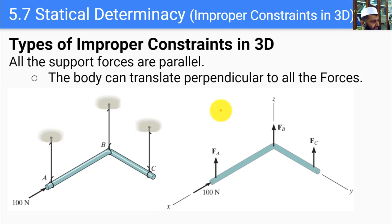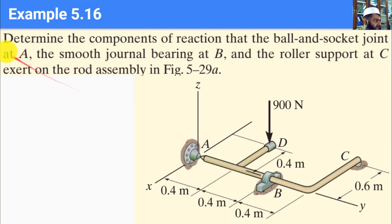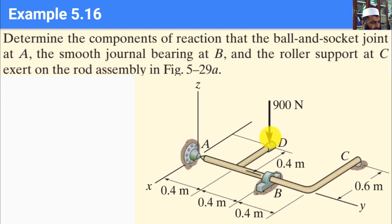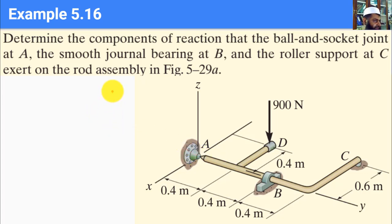Now let's look at an example. We want to determine the components of the reaction that the ball-and-socket joint at A, the smooth journal bearing at B, and the roller support at C exert on the rod assembly in figure 5-29. This pipe assembly has one active force. The first support at A is a ball-and-socket joint providing force reactions in three directions.